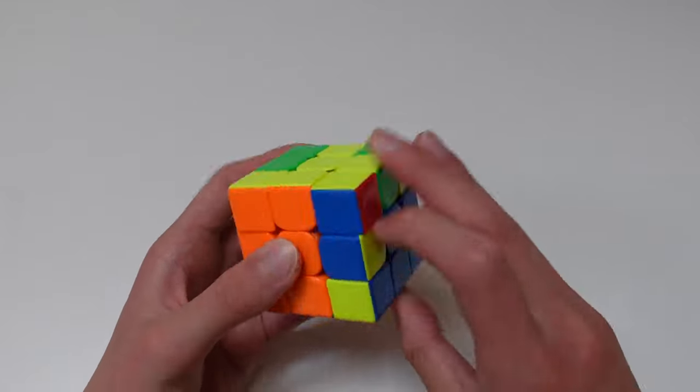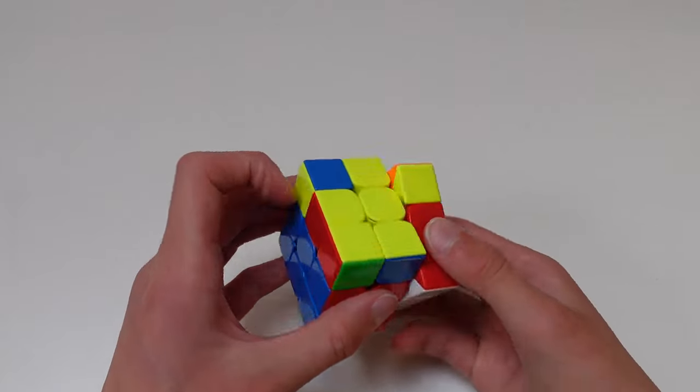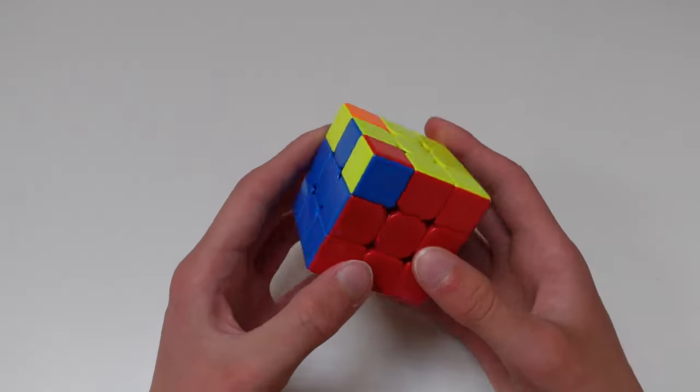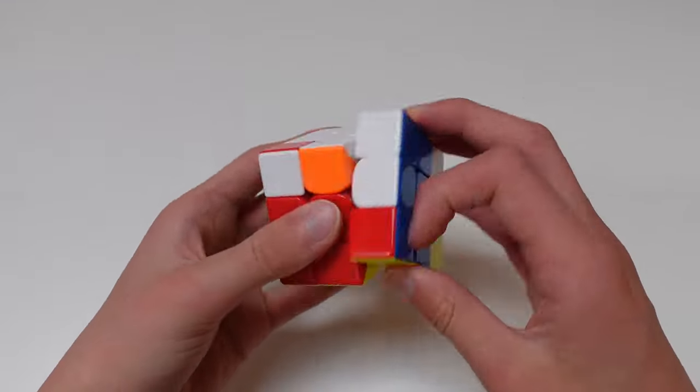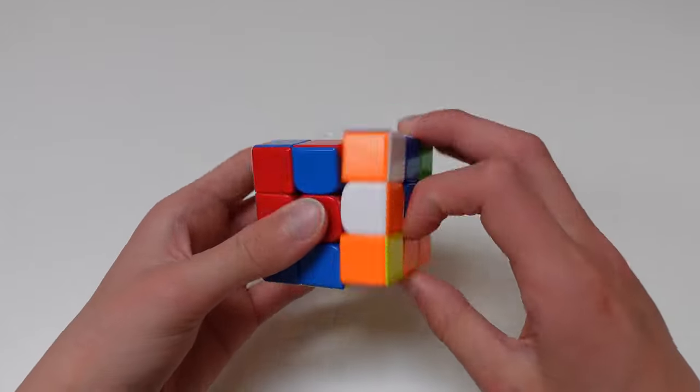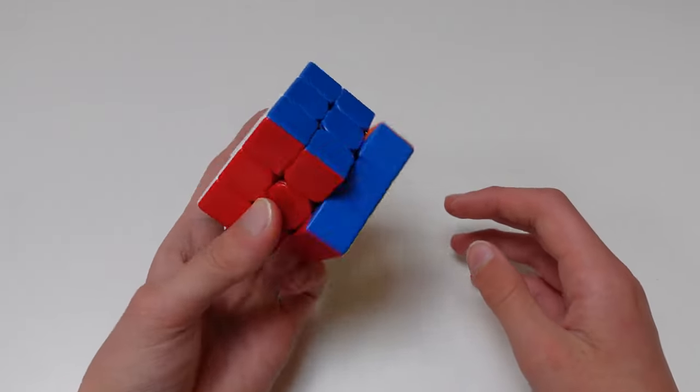This method is very easy to learn as you only need to memorize a minimum of six algorithms. Layer by layer is the method most people learn when they first learn how to solve the Rubik's Cube, and it is the foundation of many methods used in top speed cubing.